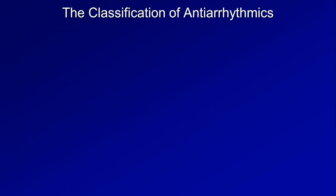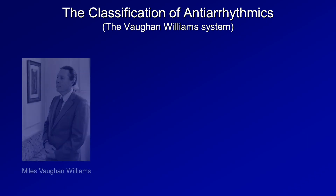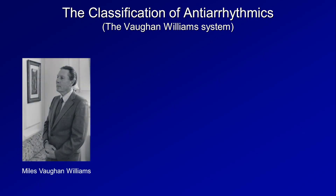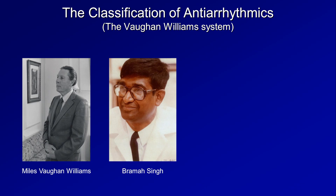I'm first going to tackle that last issue: the classification system. This is usually called the Von Williams system, not after the famous English composer Ralph, but actually after Miles, a pharmacologist and, incidentally, Ralph's first cousin once removed. Miles Von Williams developed the system in the 1960s and 70s as the precise mechanisms of antiarrhythmics were first being worked out in detail, with invaluable assistance from his doctoral student, Brahma Singh. Looking over the literature of the time, Von Williams and Singh seem to have made quite the team, co-authoring a number of seminal papers in the field.